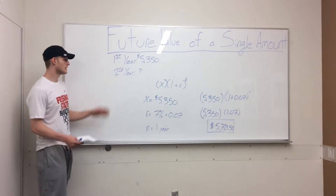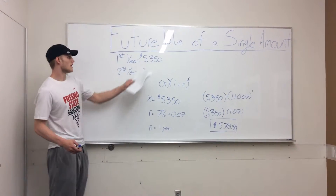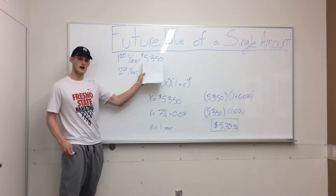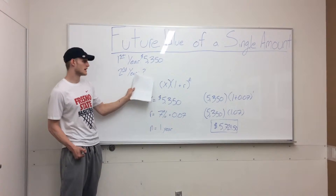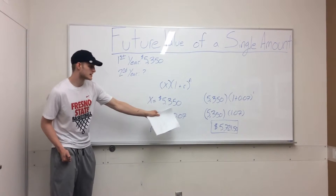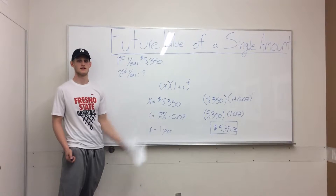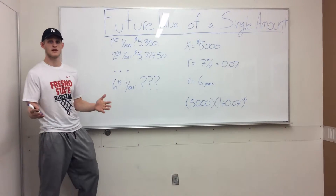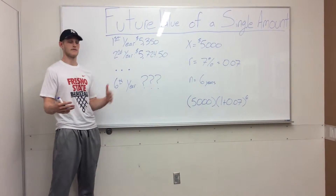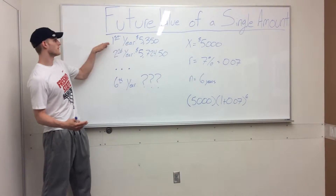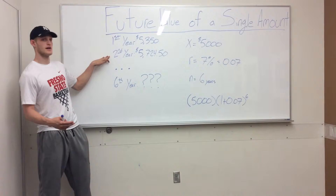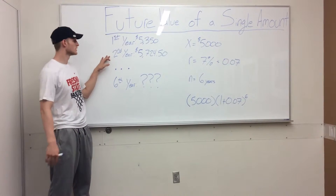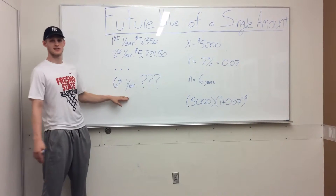In our first year we got $5,350, and in our second year we got $5,724.50. We found the amount we're going to get after our first two years of investment using compounding interest. But what about our sixth year?